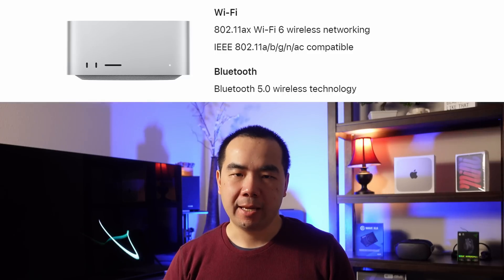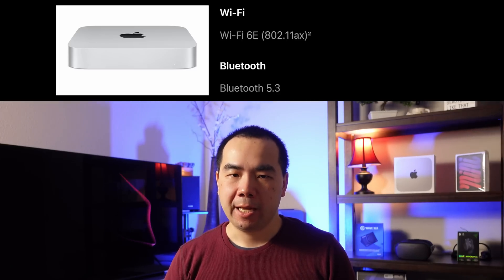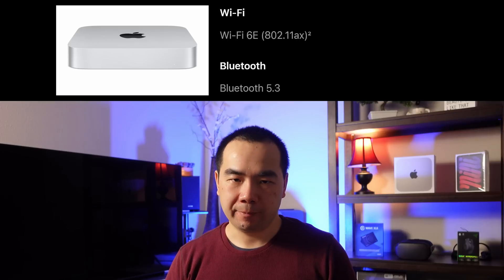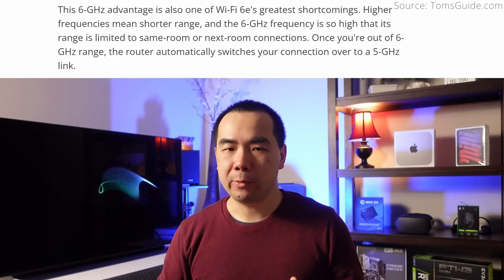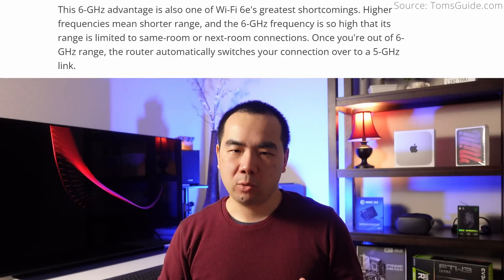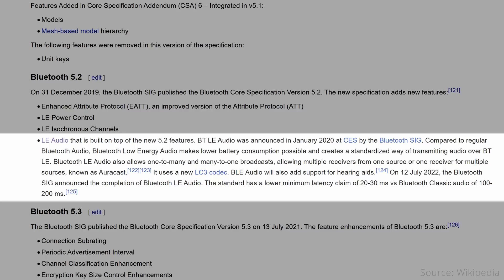With the newer machine, we also have improvements in networking. The Mac Studio has Wi-Fi 6 and Bluetooth 5.0, while the M2 Pro Mac Mini has the newer Wi-Fi 6E and Bluetooth 5.3. Wi-Fi 6E's big advantage is the ability to use the 6GHz band, which is less saturated than the 2.4 and 5GHz bands, resulting in less congestion and more stability — though higher frequencies mean shorter range, and you'll need compatible networking equipment. For Bluetooth, the most significant improvement between 5.0 and 5.3 is probably the low-energy audio introduced with Bluetooth 5.2, focused on sound-related enhancements.